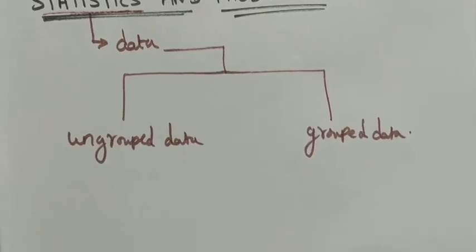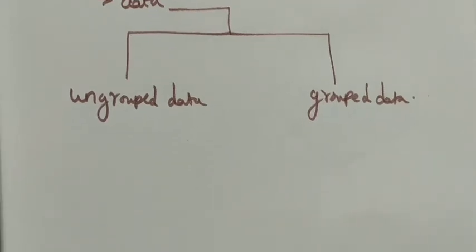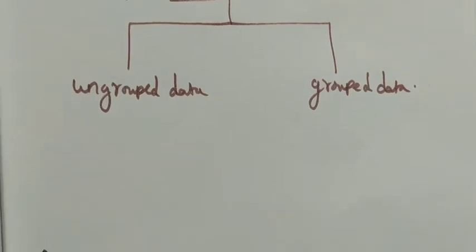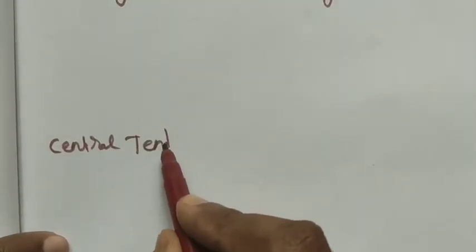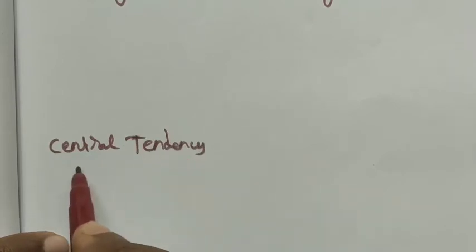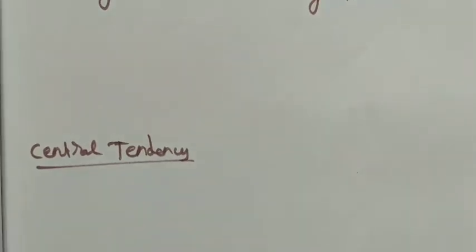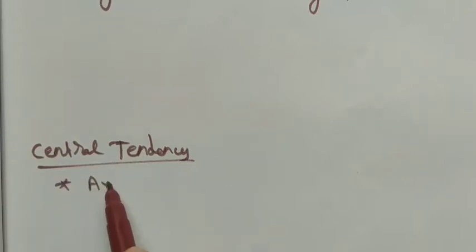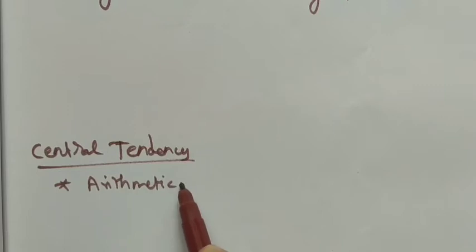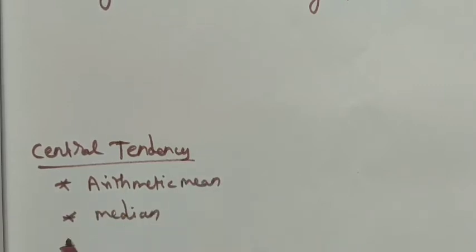Using this data, we have already studied in ninth standard that finding the central tendency is the main goal. For central tendency, we have the measures of central tendency. We use the arithmetic mean as the first one, and then median, and then mode.